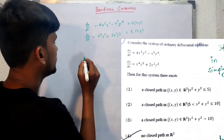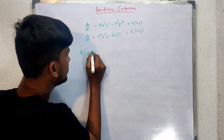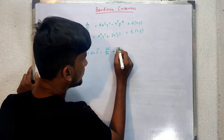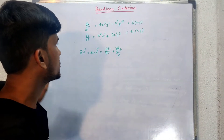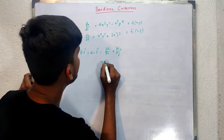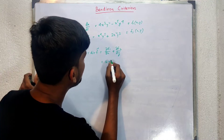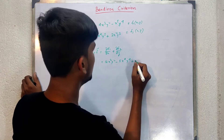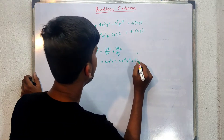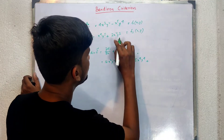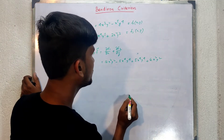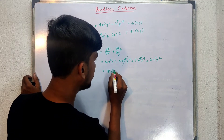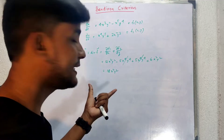We have to find div F = ∂F1/∂x + ∂F2/∂y. So ∂F1/∂x = 12x²y² − 5x⁴y⁴, and ∂F2/∂y = 5x⁴y⁴ + 6x²y². Adding these terms together, the −5x⁴y⁴ and +5x⁴y⁴ cancel, giving us 18x²y². This is equal to 18x²y², and this is not equal to zero for x ≠ 0 and y ≠ 0.